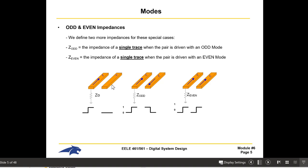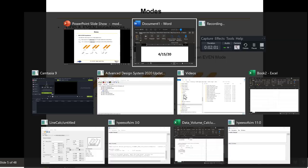Z-odd is where your coupled neighbor is transitioning in the opposite direction, and that actually impacts the impedance of the line you're driving, making it different. Z-even is when your neighbor is transitioning in the same way — either both up or both down — giving you a third different impedance.